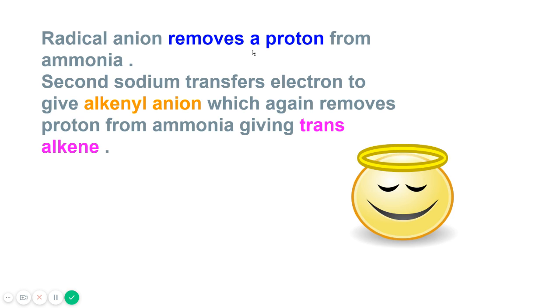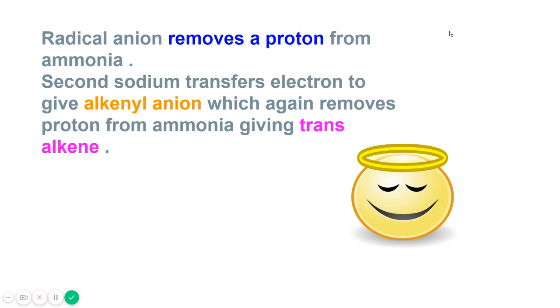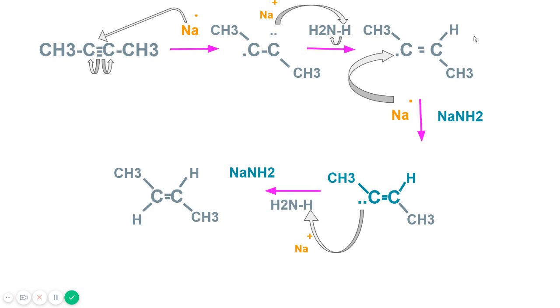Radical anion removes a proton from ammonia. This removes a proton from ammonia and hydrogen gets attached here. Second sodium transfers electron to give alkyne anion which again removes proton from ammonia giving trans alkene. As you can see here, this sodium transfers electron here and again this anion takes proton from ammonia and produces trans alkene. So this is how trans alkene is produced.